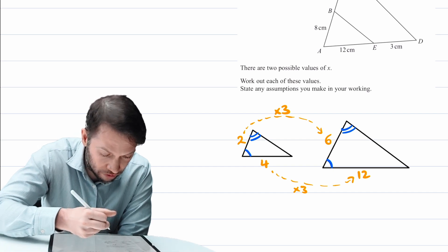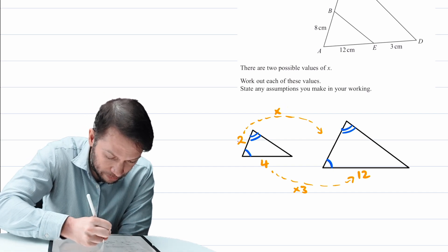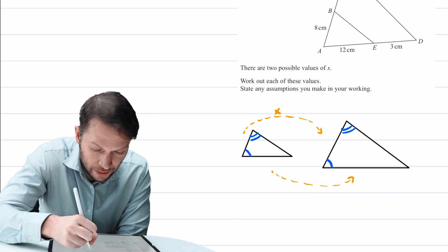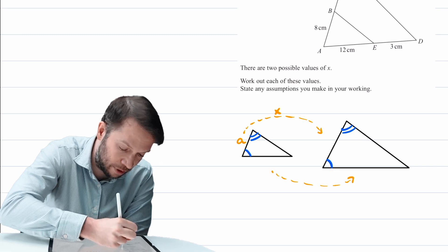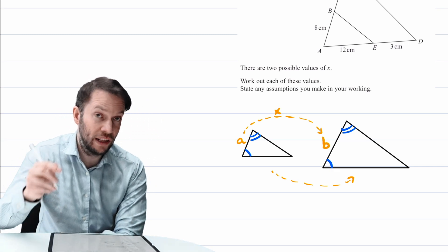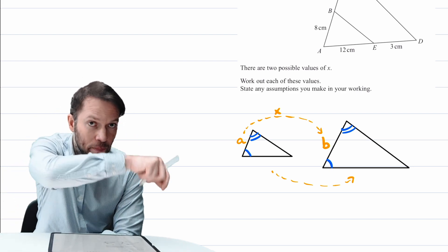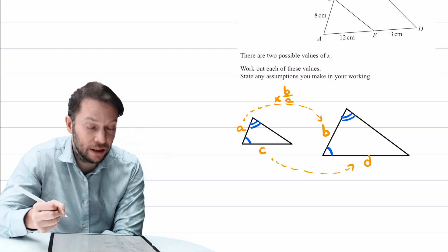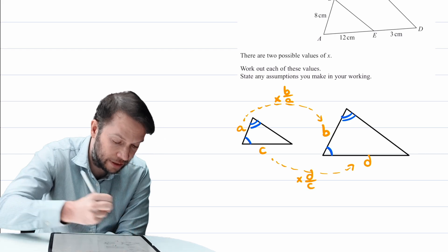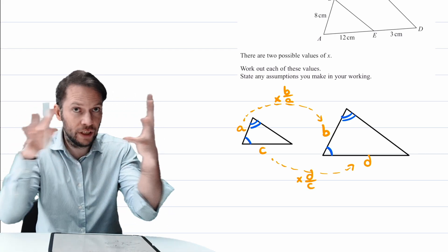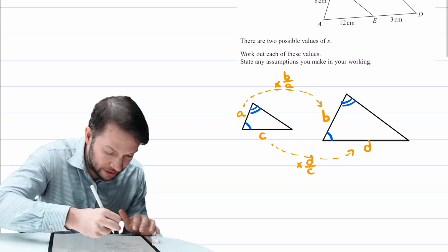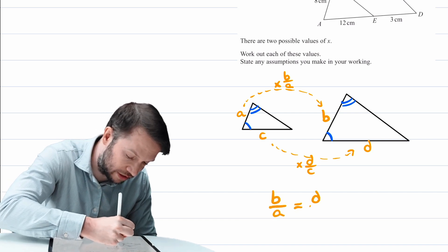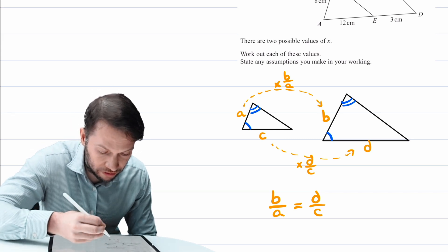In general, the scale factor is always the same. So we could say this length divided by this length is going to be the same as this length divided by this length. If we make it more general with lengths A, B, C, and D — the scale factor from A to B is B over A, and the scale factor from C to D is D over C. Since that scale factor is always the same for similar shapes, we can say that B over A is equal to D over C. That's a really important property of similar triangles that we can use here.